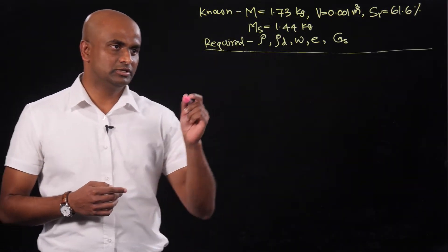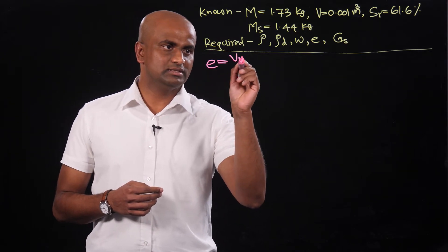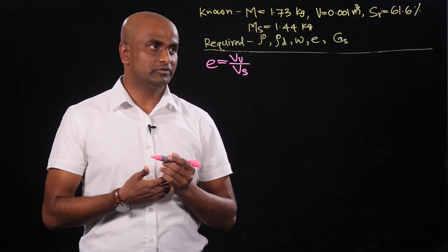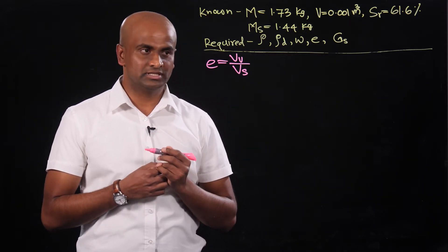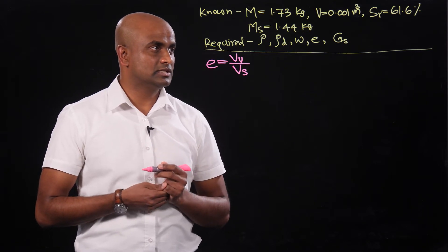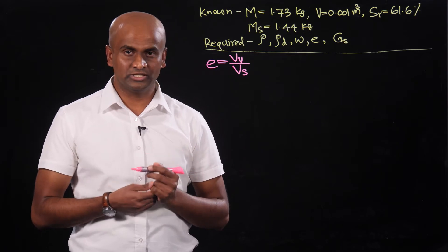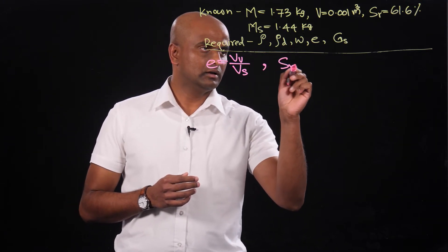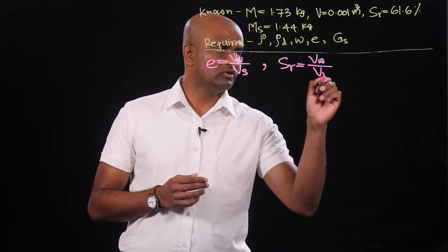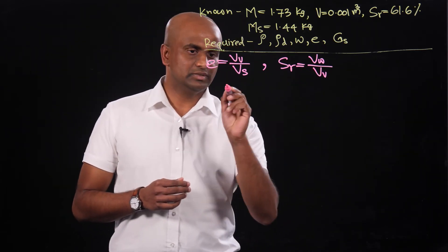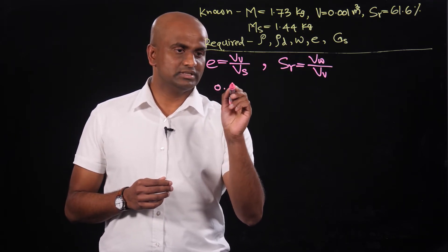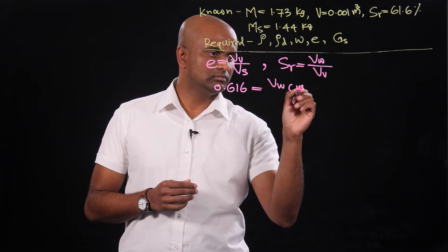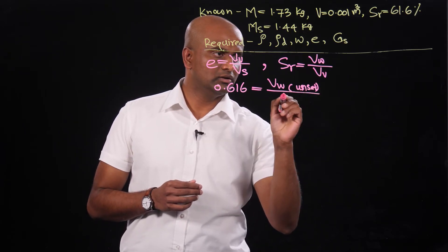Next we calculate the void ratio, defined as the volume of voids divided by the volume of solid. To calculate this we use the degree of saturation, which is given as 61.6 percent — meaning the soil is under unsaturated conditions. The degree of saturation is defined as the volume of water divided by the volume of voids. So we can write: 0.616 equals the unsaturated water volume divided by the volume of voids.